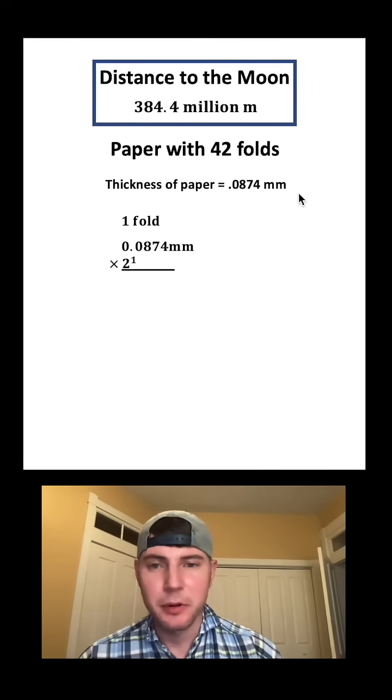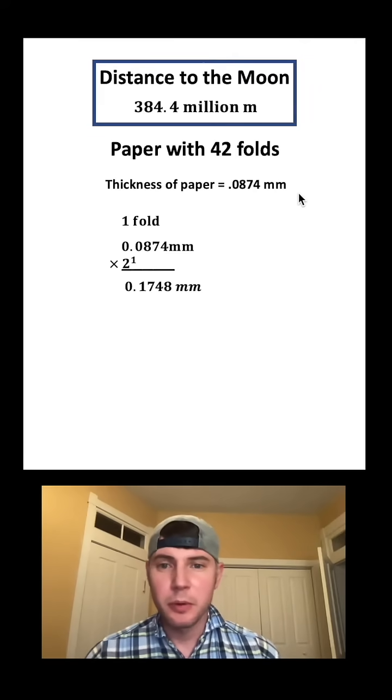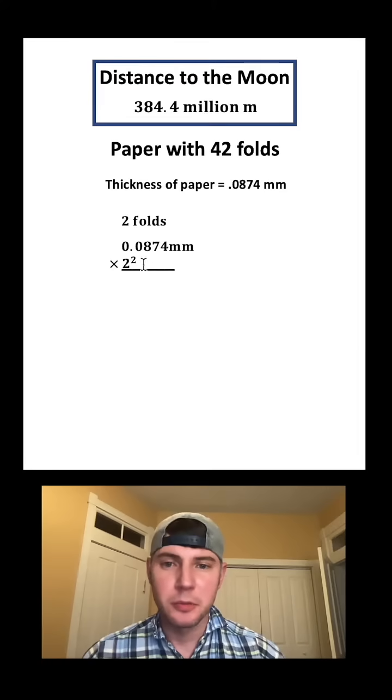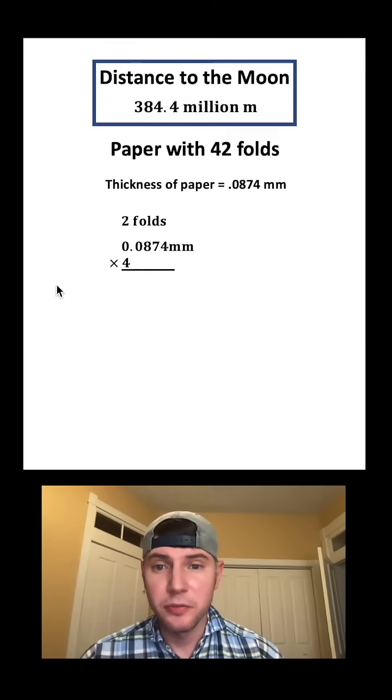We would take the thickness of our piece of paper, multiply it by 2 to the 1, and we would get 0.1748 millimeters. Or if we did two folds, we would multiply it by 2 squared, which would be 4, and that would give us 0.3496 millimeters.